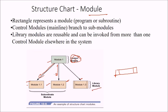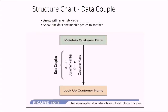An arrow with an empty circle is a data couple, showing the data one module passes to another. For example, a main customer data module may pass a customer number to a lookup customer name module, and that module may pass the customer name back to the calling function — maintain customer data.